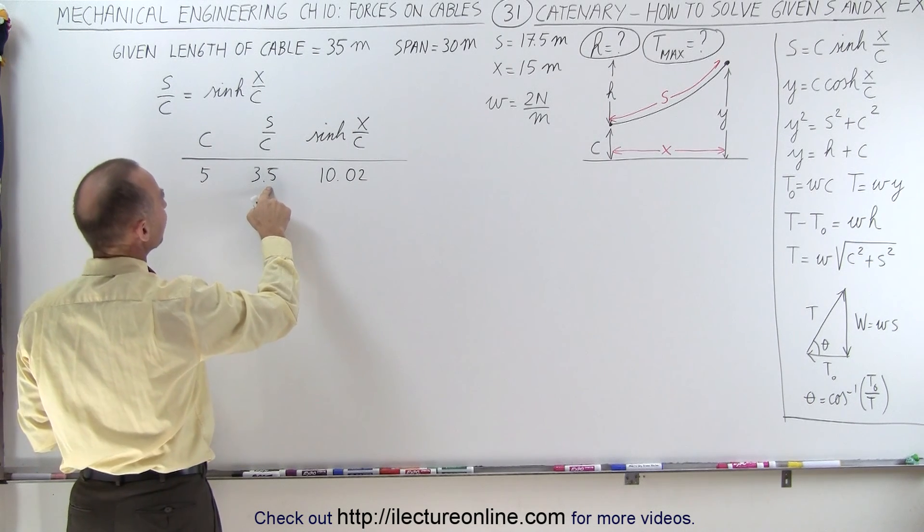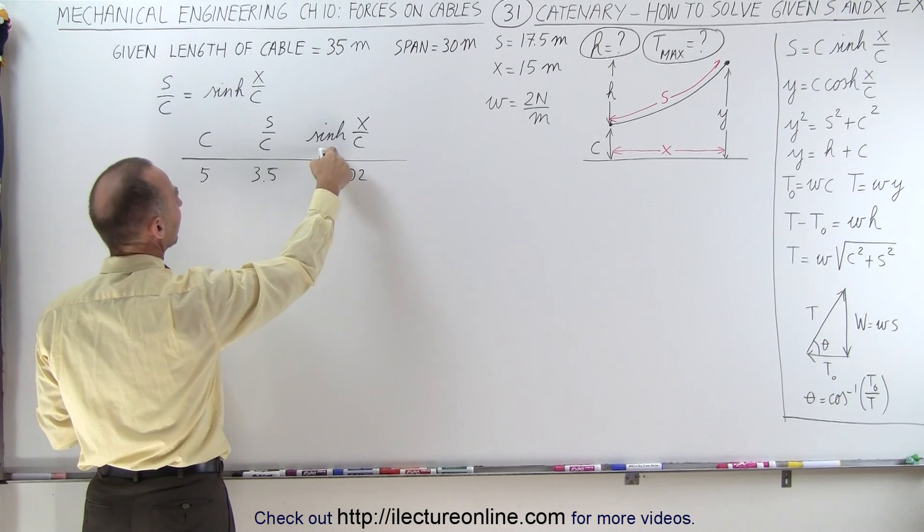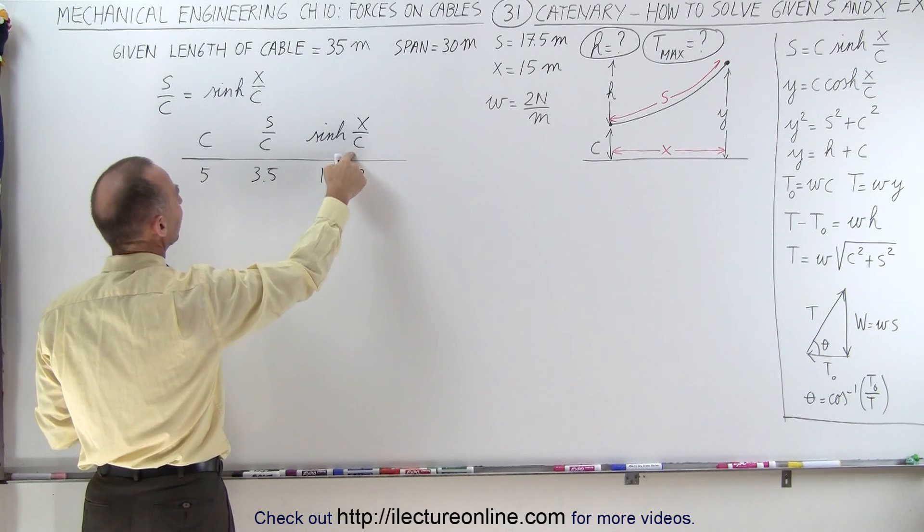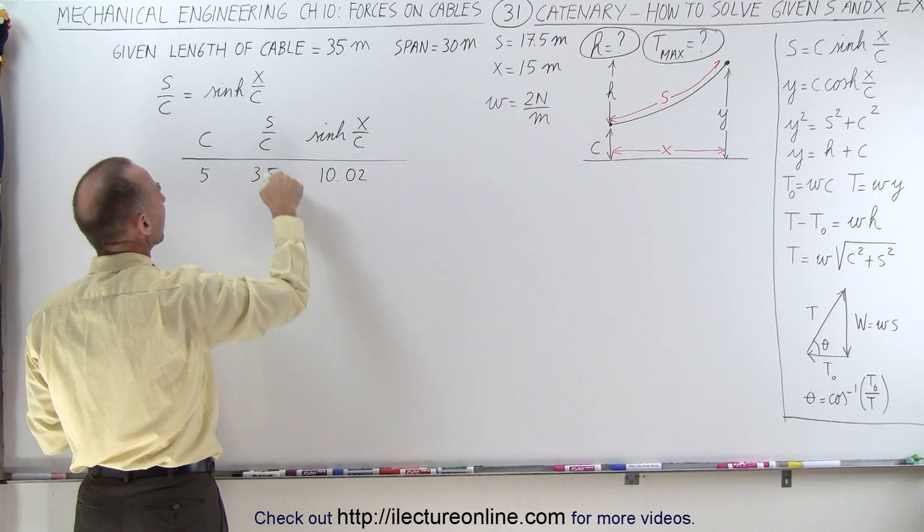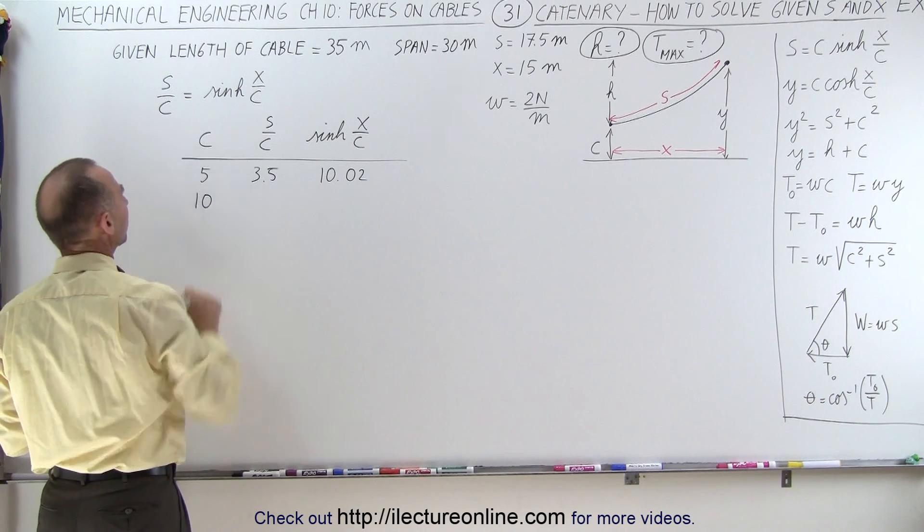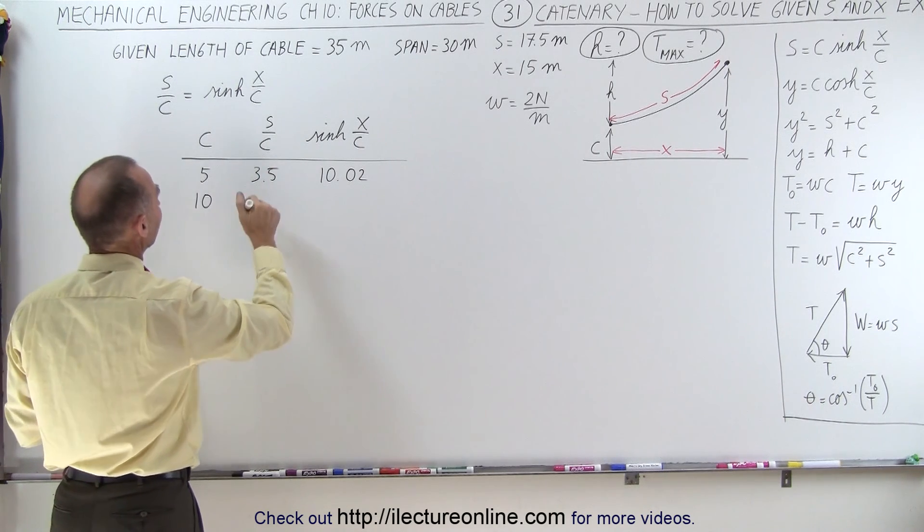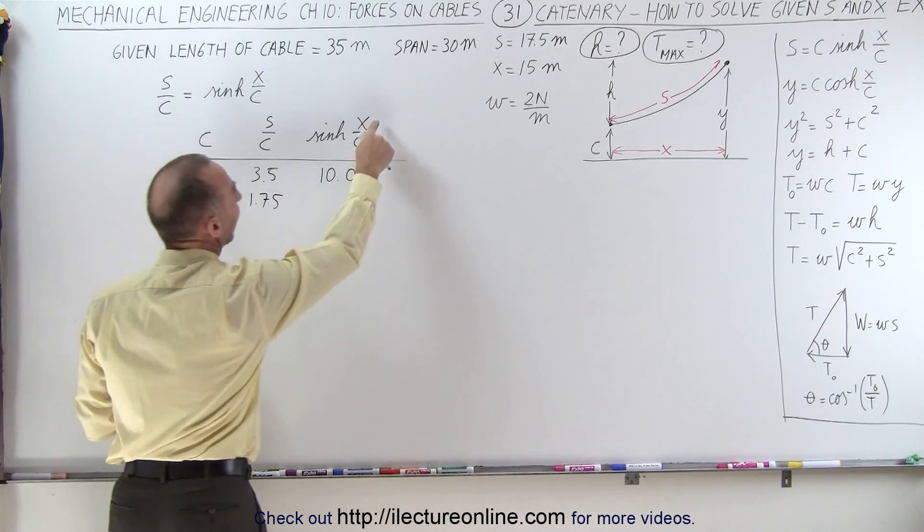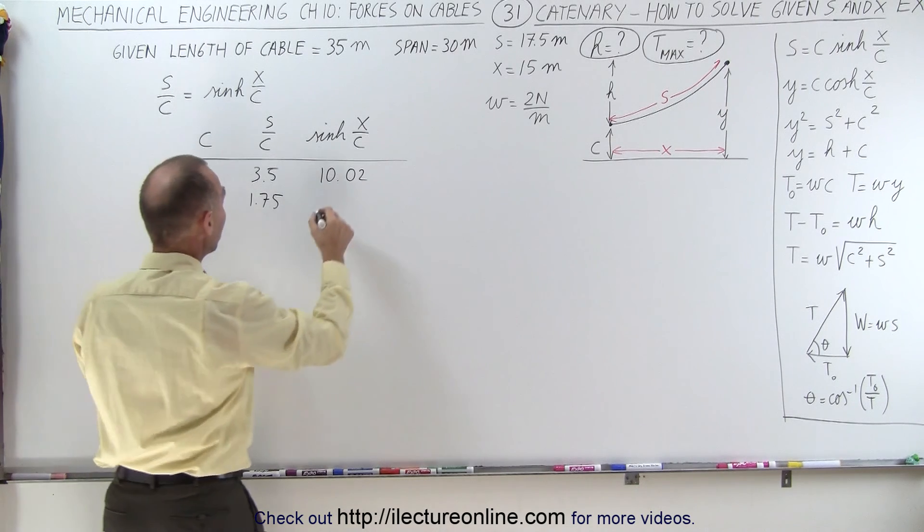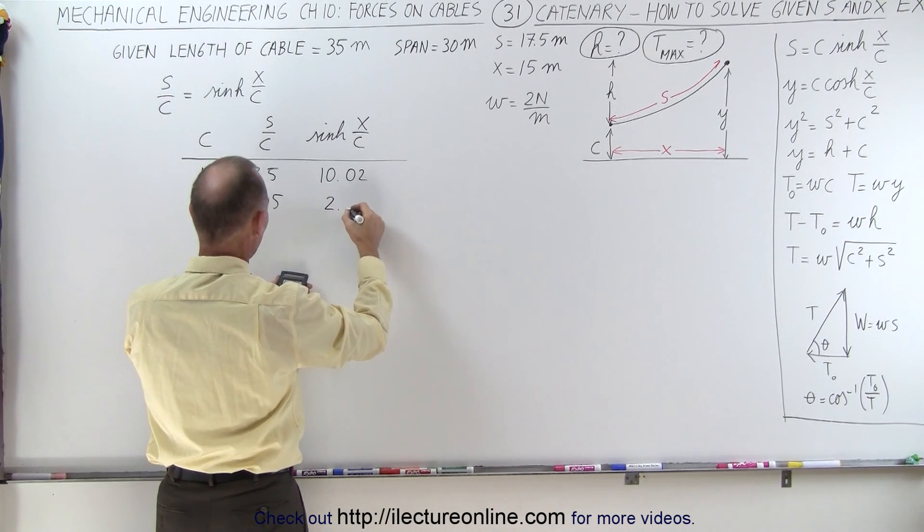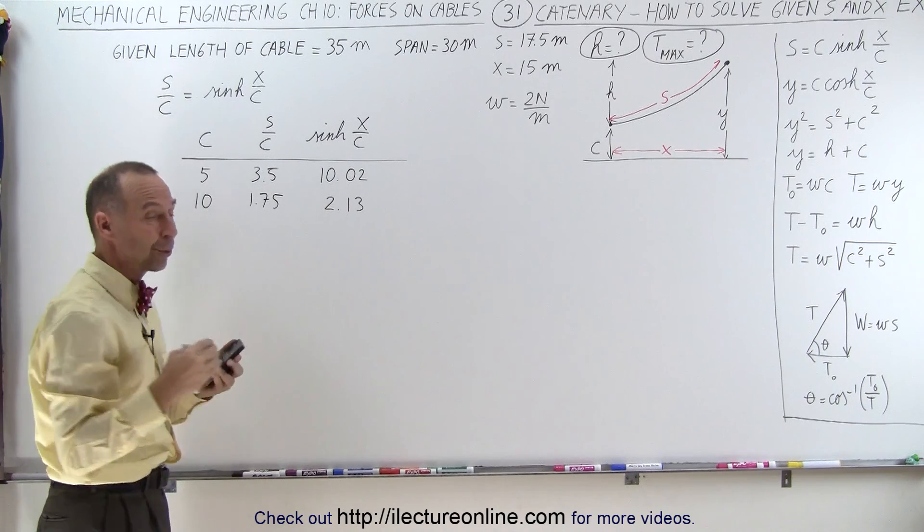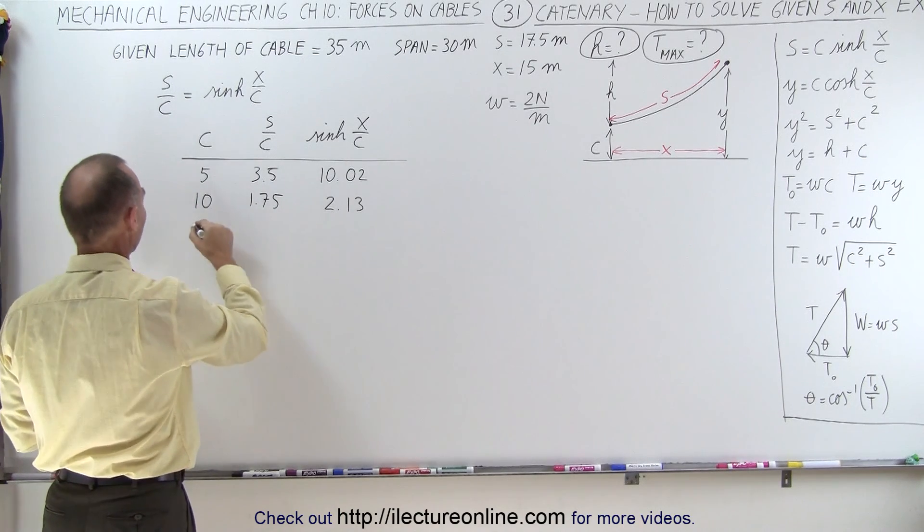We need a smaller hyperbolic sine of X over C, so we need to make C bigger. If we make C bigger, this will become smaller. This will also become smaller, but I think this will become smaller more quickly. Let's try C equals 10. So 17.5 divided by 10 is 1.75, and X which is 15 divided by 10, that's 1.5, take the hyperbolic sine of that and we get 2.13. That's a lot closer, but it's still too big.